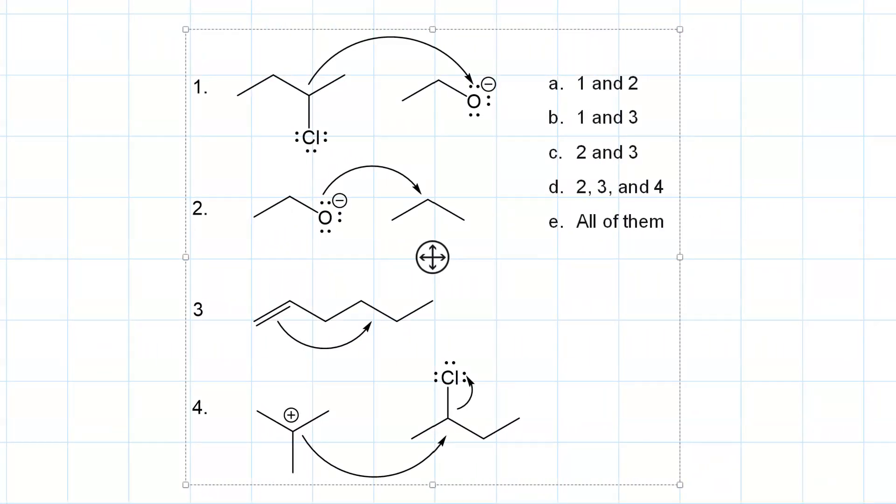Let's go through step by step. The problem with curved arrow number one is that it starts on an atom. That's bad. It also exceeds an octet. Also very bad.